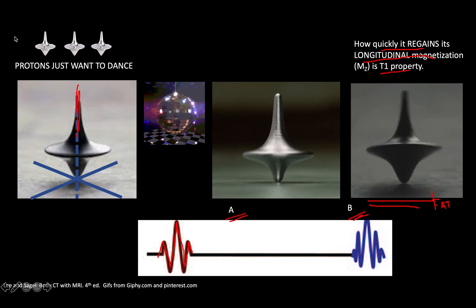The property on how quickly it would regain its longitudinal magnetization is its T1 property. Because fat is quick to regain, this is going to be called T1 shortening. Fat has a short T1 time. You're going to hear that a lot - T1 shortening. That means the substance is just like fat in the sense that it has a short T1 property, giving us a bright signal on T1-weighted images.